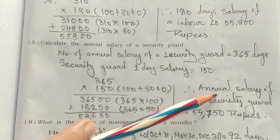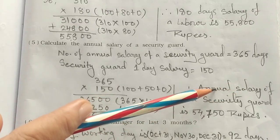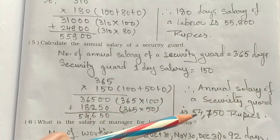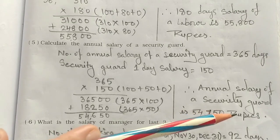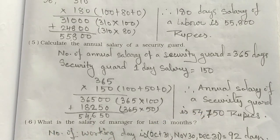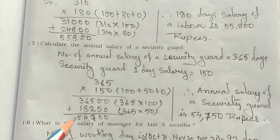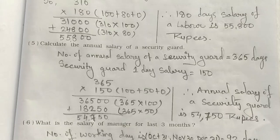Therefore, the annual salary of a security guard is 54,750 rupees. That is the answer for question 5. Now see the last, sixth question.